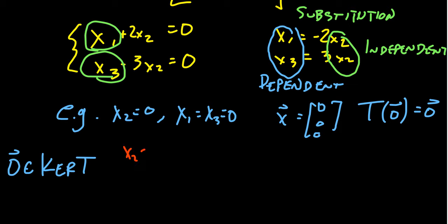If we take x2 to equal one, then you would get that x1 is equal to negative two. And you get that x3 is equal to three. And so your vector x, we're saying here, is the vector negative two, one and three. Like so.